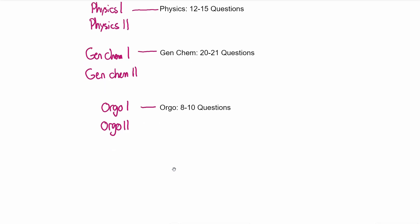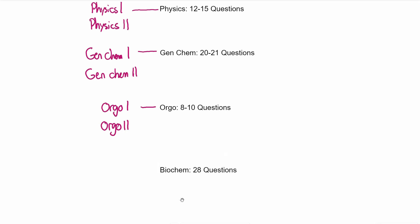Next, we've got biochemistry, sometimes just called biochem. I estimate biochem has about 28 questions, though it depends on how in-depth your biochem class is. Orgo, gen chem, and physics are fairly self-contained, but with biochem it starts to get a little iffy. Biochem is the single most important class for the MCAT. In most universities it's one semester; in some it's two. But biochem is absolutely the most critical subject.